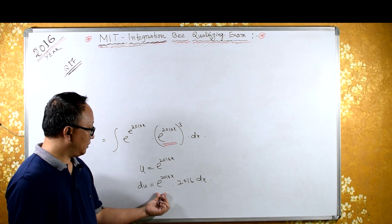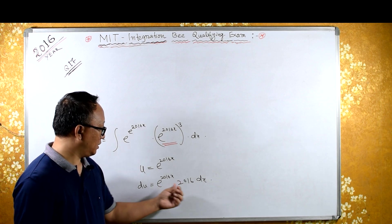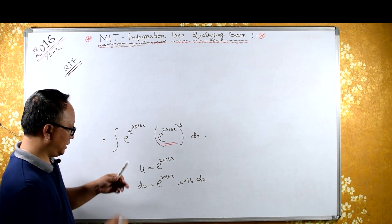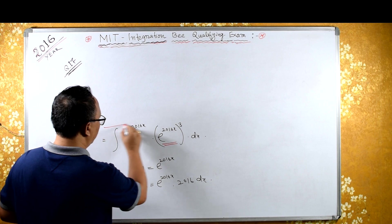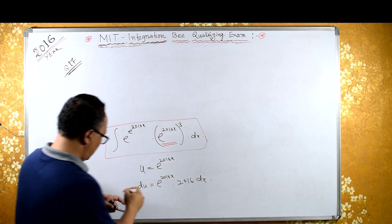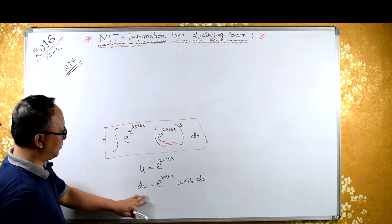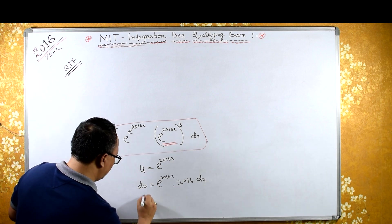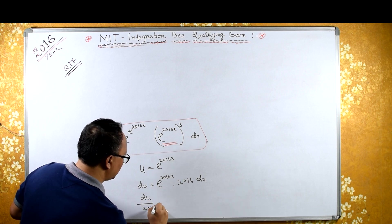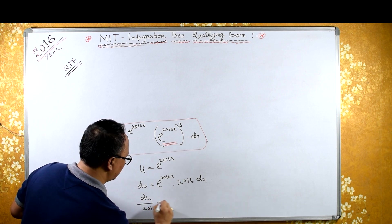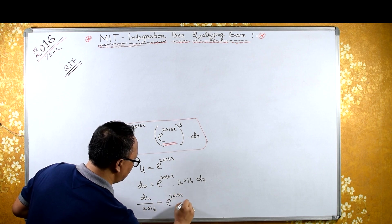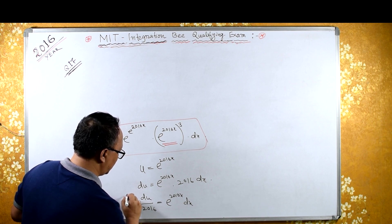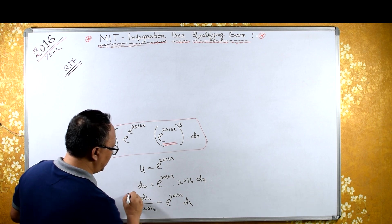So we have du equals to e raised to 2016x, into 2016, into dx. Now, I can rearrange: du upon 2016 is equal to e raised to 2016x into dx. This is my du substitution.